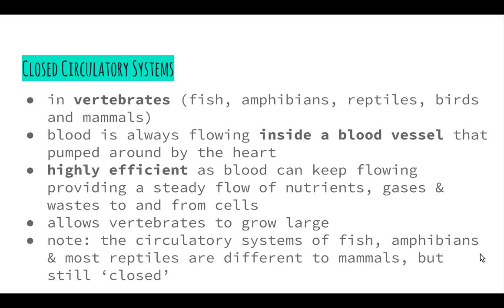It's important to note that the circulatory systems of fish, amphibians, and most reptiles are slightly different to mammals, but still closed. This comes down to the number of chambers within the heart. Because they are smaller and less complex organisms, they've adapted to have a different number of heart chambers, but all blood is continuously flowing within those three types of blood vessels.